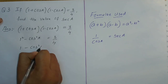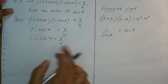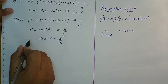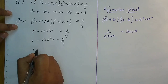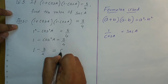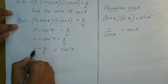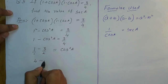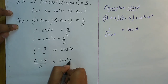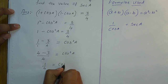So 1 - cos²a = 3/4. Transposing, -cos²a = 3/4 - 1, which gives cos²a = 1 - 3/4 = 1/4. So cos²a = 1/4.